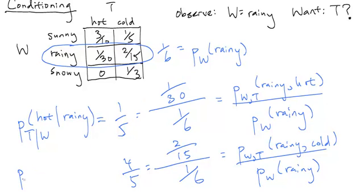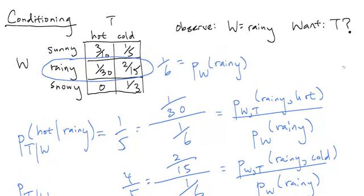And similarly down here, we're going to have probability of T given W, so this bar here means given, or conditioned on, W being equal to some specific value, which is why this procedure is actually usually called conditioning.